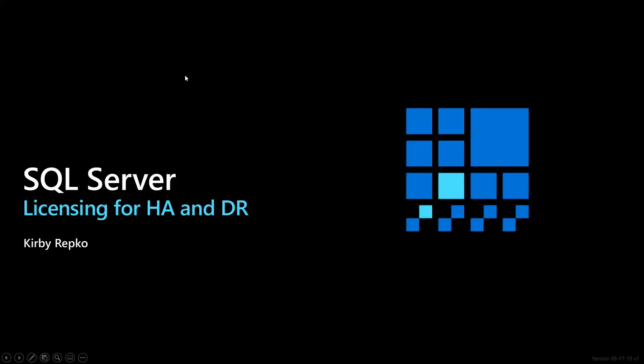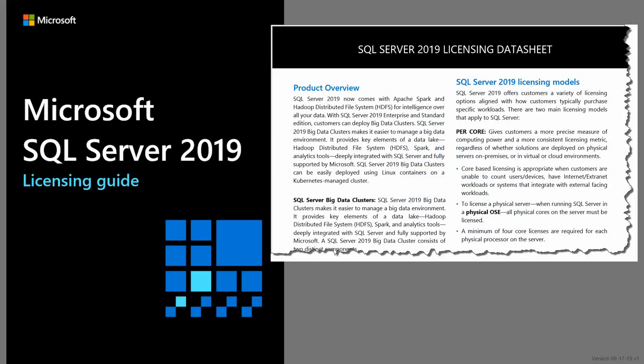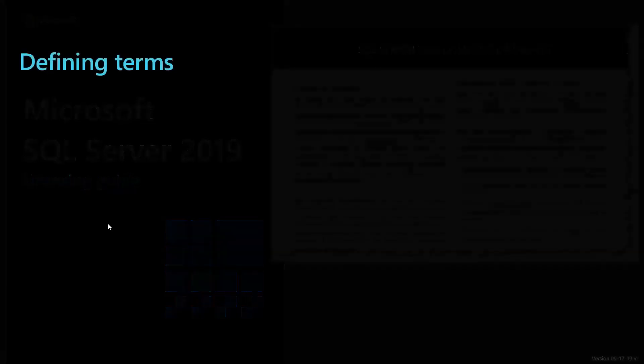I don't pretend to be a SQL licensing expert at all — I'm just reading from two guides. There is a four-page data sheet that's available, and I'll give you links to both. There's also a 42-page SQL 2019 licensing guide, and typically, even though it's 2019 and you might have 2017 or 2012 or something older, on an enterprise agreement these things are backward compatible. So we are referring to the SQL 2019 guide.